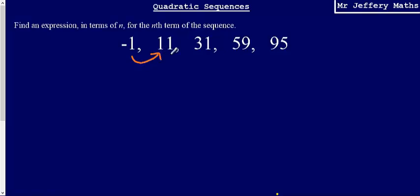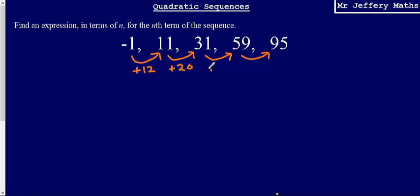In order to do this, the first thing we need to do is look at what the sequence is going up by from term to term. Between the first and second term we've increased by 12, then by 20, then by 28, and then from the fourth to the fifth term we've increased by 36. Next we need to look at what is called the second difference.